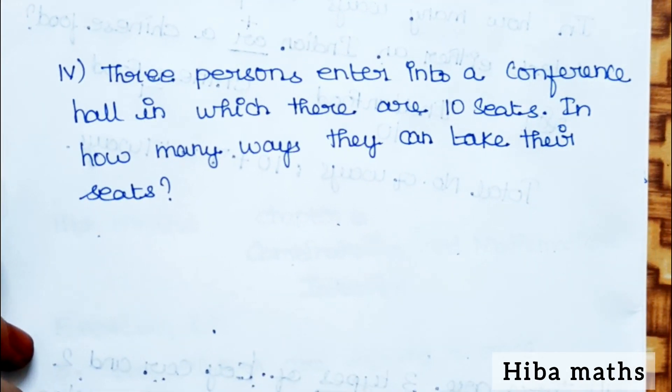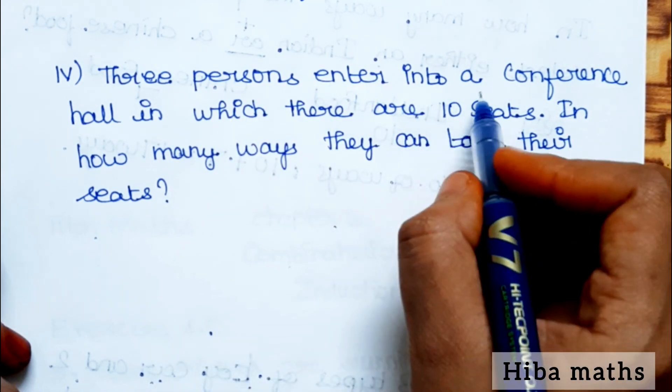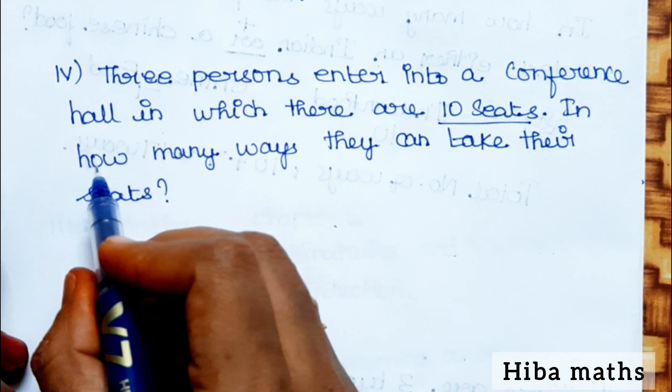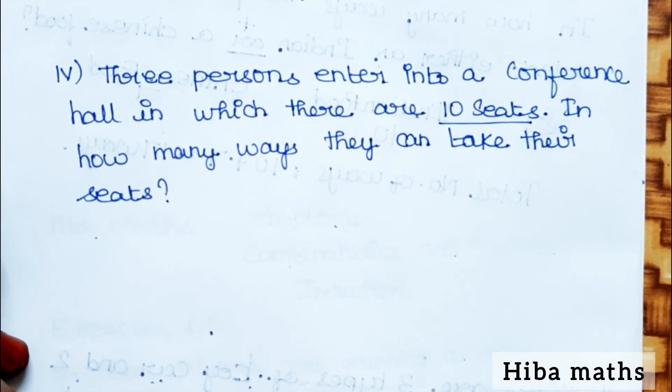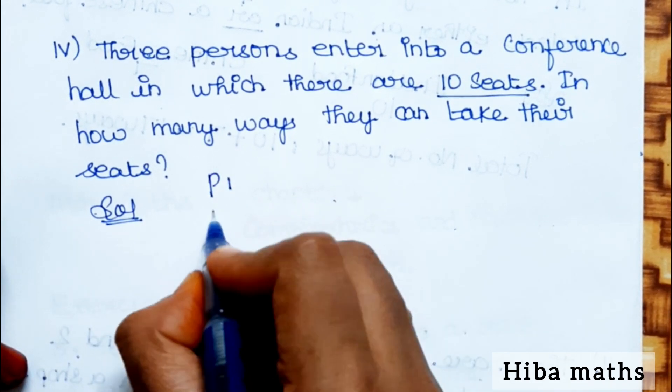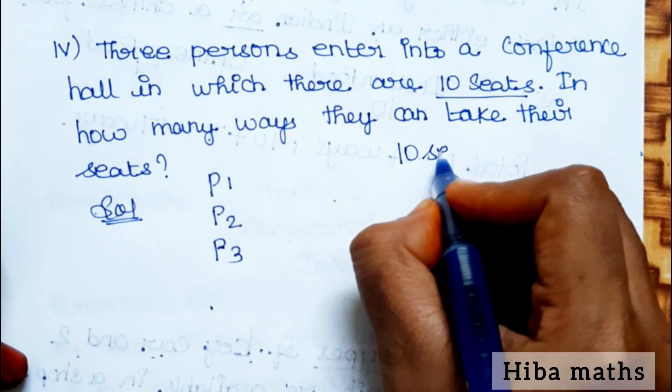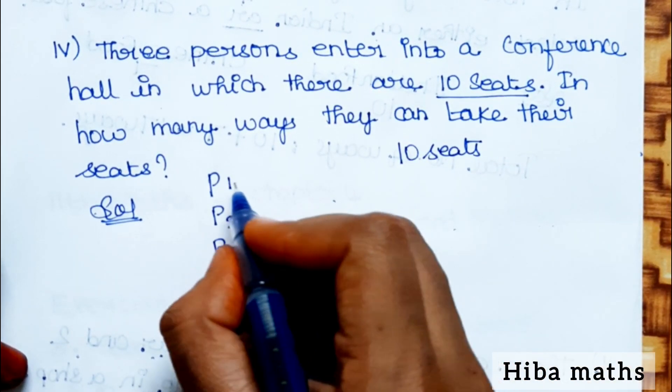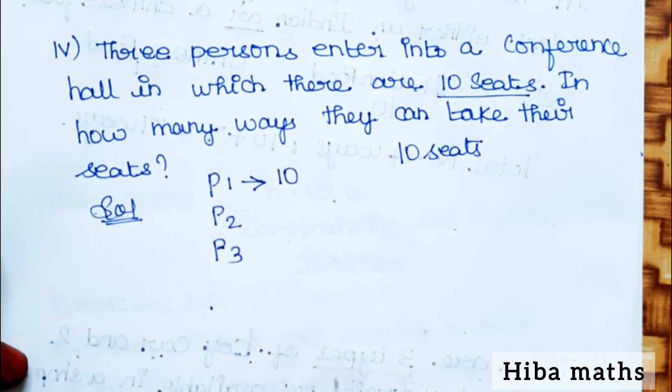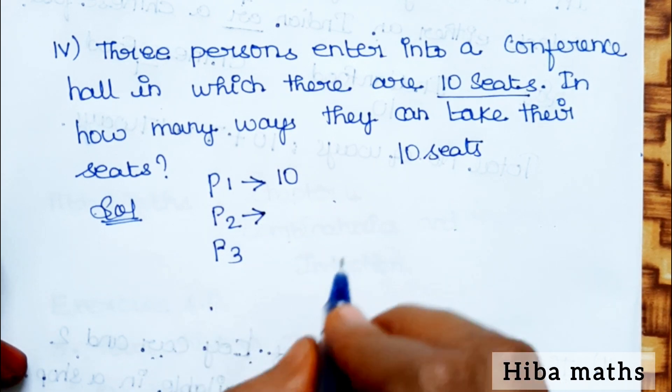Fourth question: Three persons enter into a conference hall in which there are 10 seats. In how many ways can they take their seats? There are 3 persons: first person, second person, third person. Total 10 seats are available.